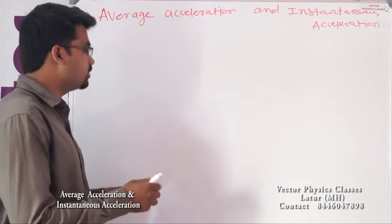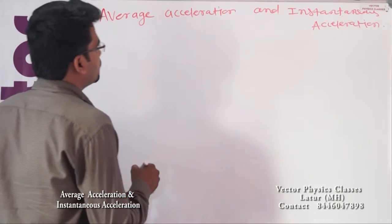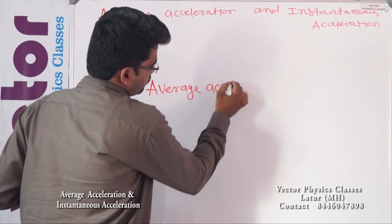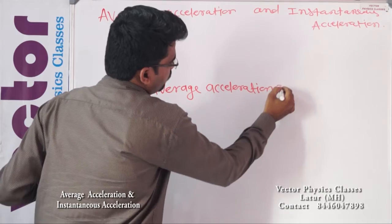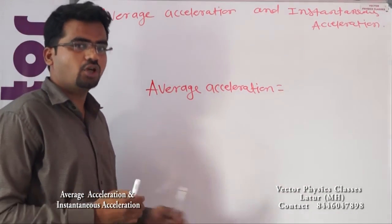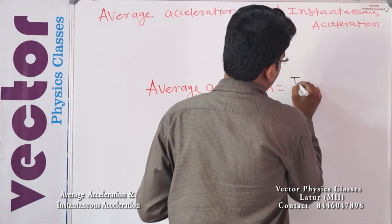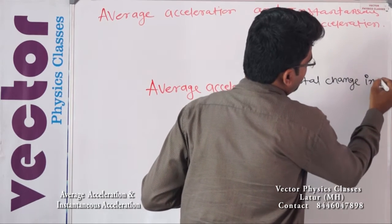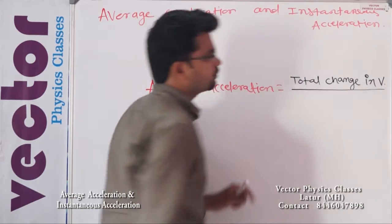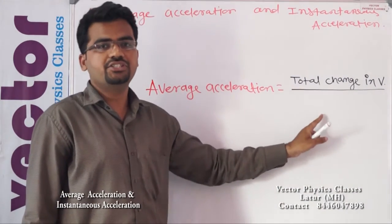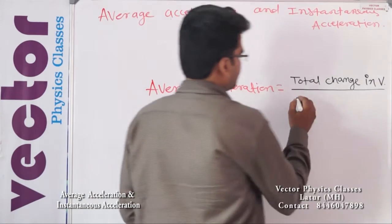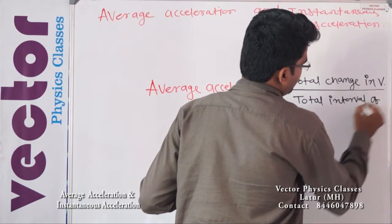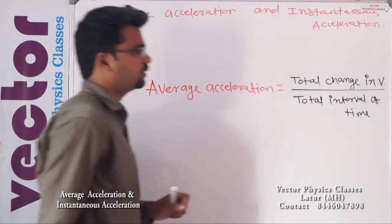So average acceleration can be written as equal to total change in velocity divided by the total time interval in which this change occurs.